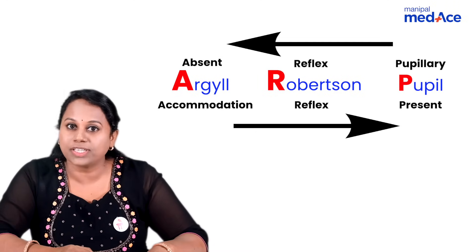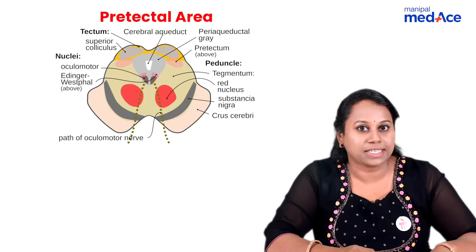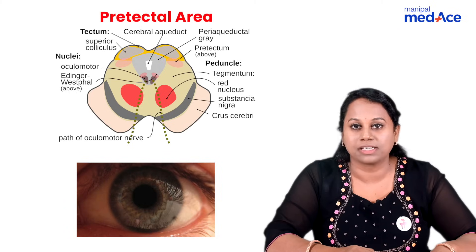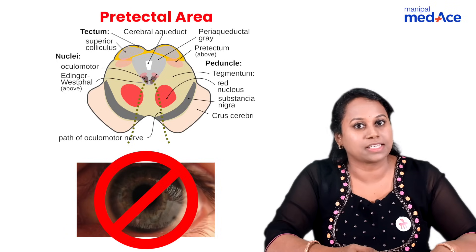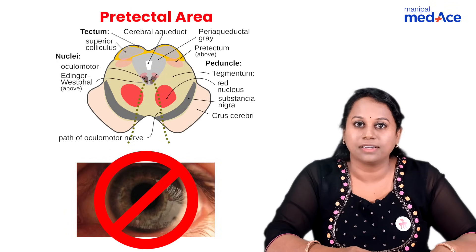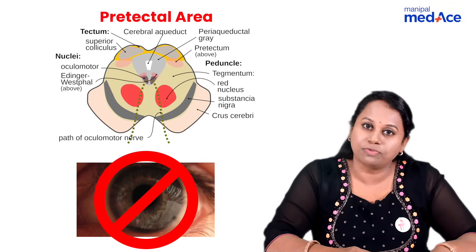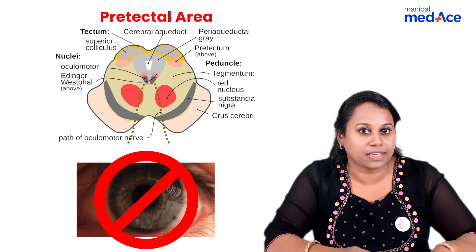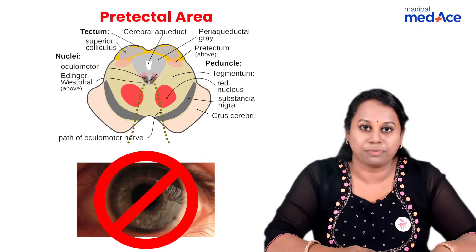What is the pathophysiology here? There is damage to the pre-tectum of the midbrain. The pre-tectum is responsible for the pupillary reflex, so when there is damage to the pre-tectum, the pupillary reflex is absent. For the accommodation reflex, there is no role for the pre-tectum — that is why, even if the pre-tectum is damaged, the accommodation reflex is still present.